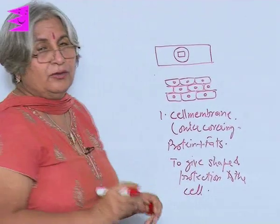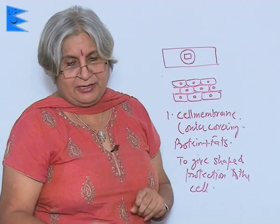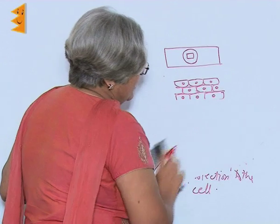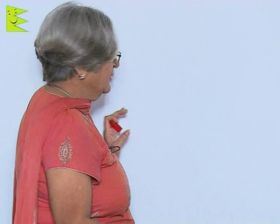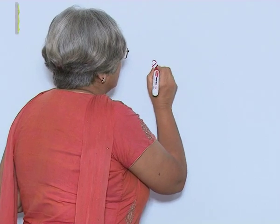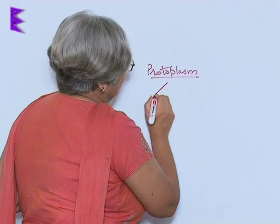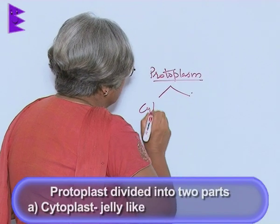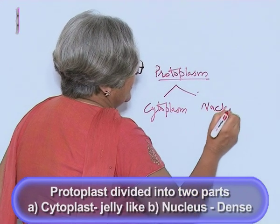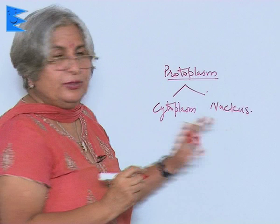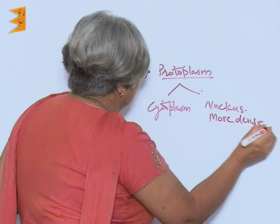The cell membrane also demarcates the cell from other cells. Inside the cell membrane there is a jelly-like substance called protoplasm, which is divided into two parts: the cytoplasm and the nucleus. The nucleus is more dense, while the cytoplasm is jelly-like.